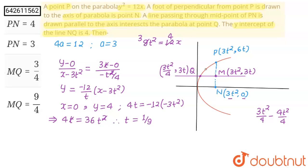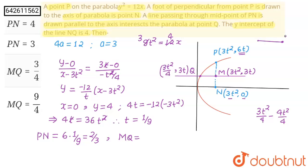Now we can find all coordinates. The length PN equals 6t, and with t equals 1 upon 9 this becomes 2 upon 3. For length MQ, the distance between two horizontal points is the difference in x-coordinates: 3t squared minus 3t squared upon 4, which equals t squared upon 4.